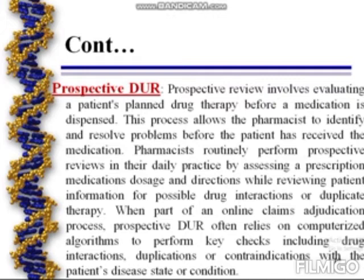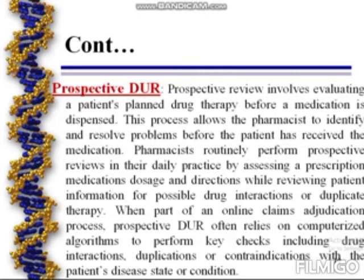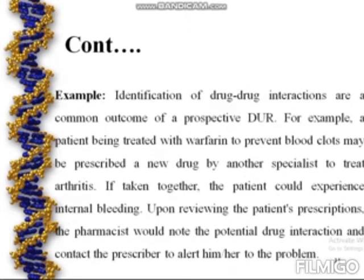Prospective Drug Utilization Review involves evaluating a patient's planned drug therapy before a medication is dispensed. This process allows the pharmacist to identify and resolve problems before the patient has received the medication. Pharmacists routinely perform prospective reviews in their daily practice by assessing prescription medication dosage and directions while reviewing patient information for possible drug interactions or duplicate therapy. When part of an online claims system, prospective DUR often relies on computerized algorithms to perform key checks including drug interactions, duplications, or contraindications with the patient's disease state or condition.